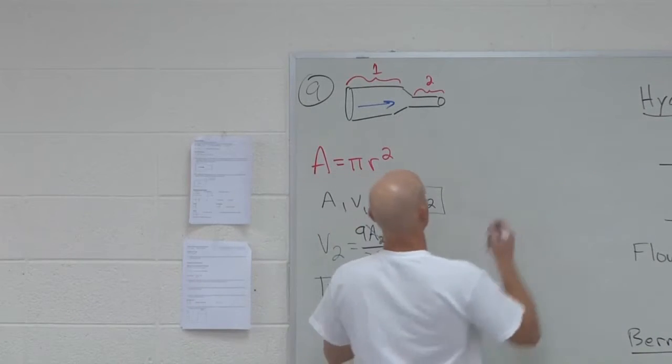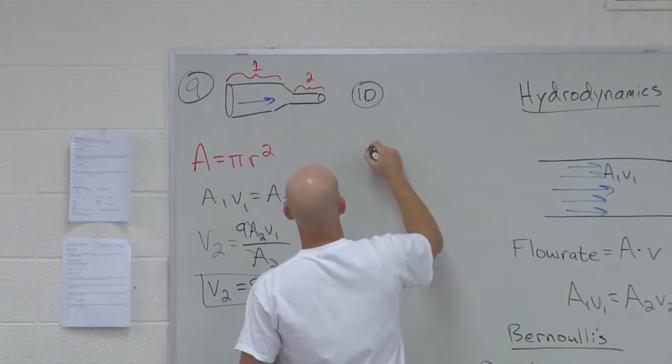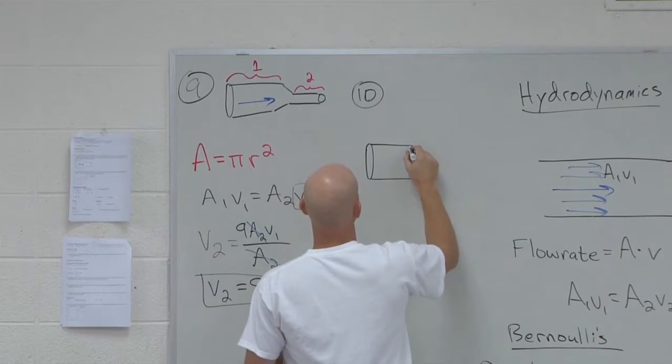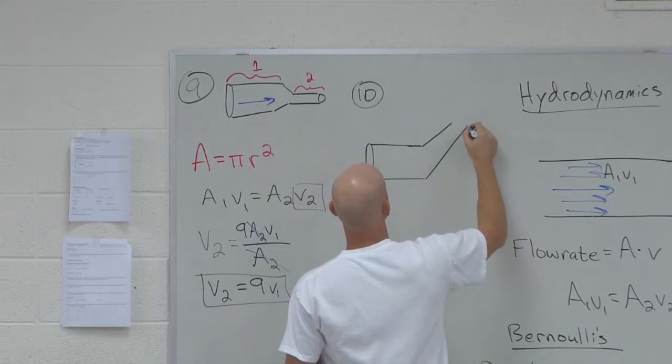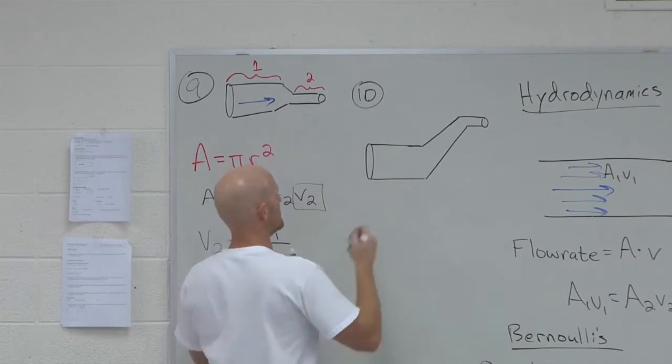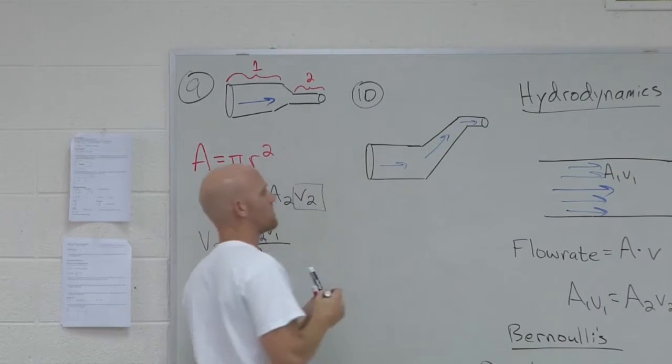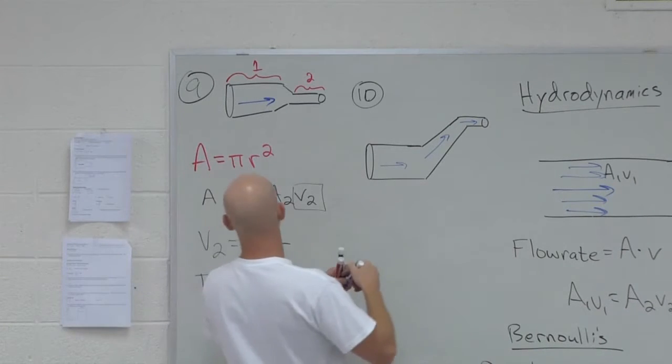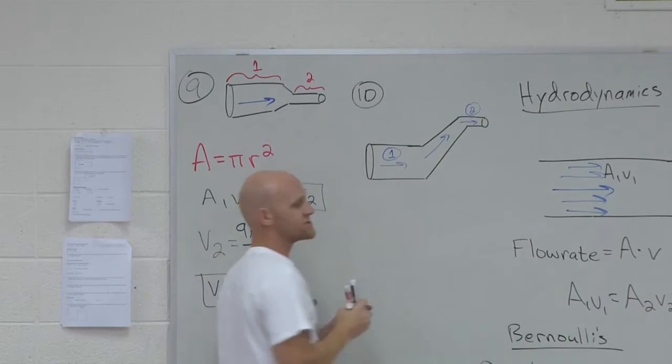All right, let's look at number 10. So number 10. Number 10 is a conceptual problem. It's not a plug-and-chug. So I actually don't have a plug-and-chug for you to do with Bernoulli's, but we could, but it's really just more plug-and-chug. So here we've got water flowing. And the question is, we got this defined as region number one, and this little area defined as region number two.